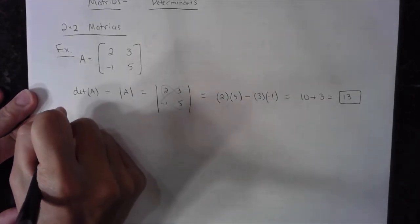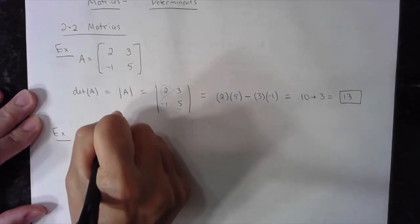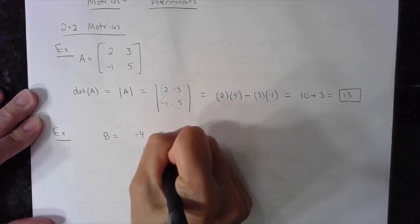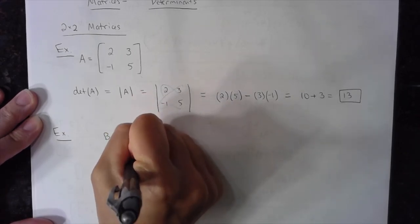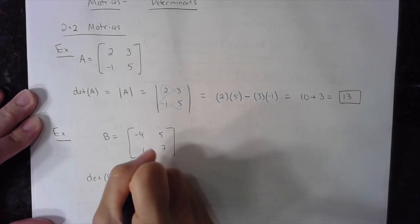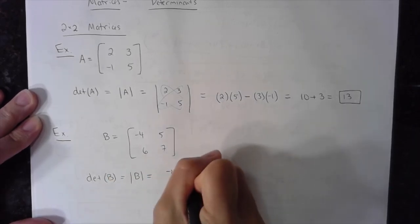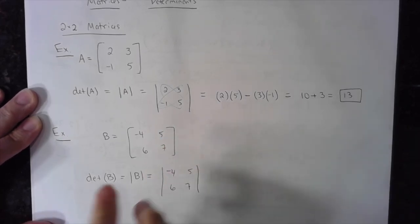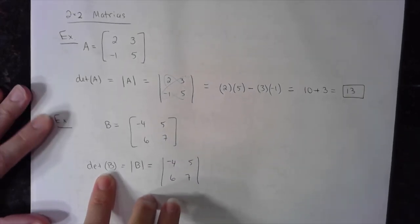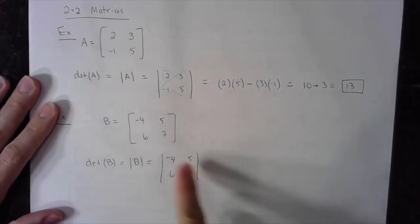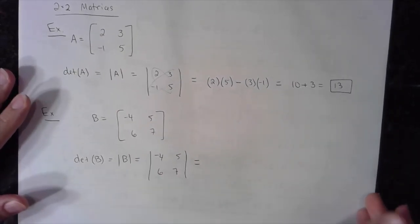Here's another example. Matrix B is represented by negative four, five, six, seven. I want to find the determinant of matrix B. Again, can be represented by all of these notations: det B is the determinant of matrix B, B with the absolute value signs around it, or just the matrix with those vertical lines.